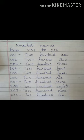206 — T-W-O 2, H-U-N, D-R-E-D 100, S-I-X 6. 206. Now, 207 — T-W-O 2, H-U-N, D-R-E-D 100, S-E-V-E-N 7. 207.